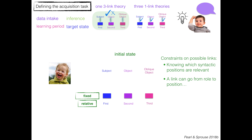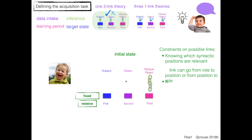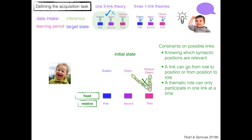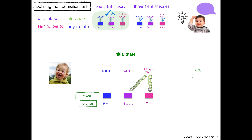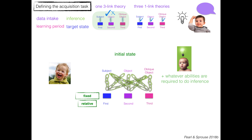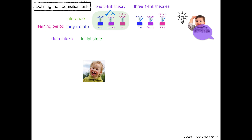You also need a constraint that a link can go from either a role to a position, or you could have an expectation about what kind of thing a position likes to have — from position to role. The idea that a position has a preference for a certain type of role as opposed to a role having a preference for a certain type of position. And then the idea that we really are looking for one-to-one links — not links where a role can link to either object or oblique object. A syntactic position can only participate in one link at a time, plus whatever abilities are required to do inference.